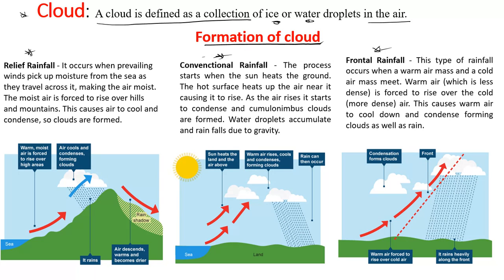First, we have relief rainfall. Relief rainfall occurs when prevailing winds pick up moisture from the sea as they travel across it. The moist air is then forced to rise over hills or mountains, causing the air to cool. Once the air cools, it condenses to form cloud, and when the cloud grows to a large size it falls down as rain. This part is called the windward side, and this side here is called the leeward side.